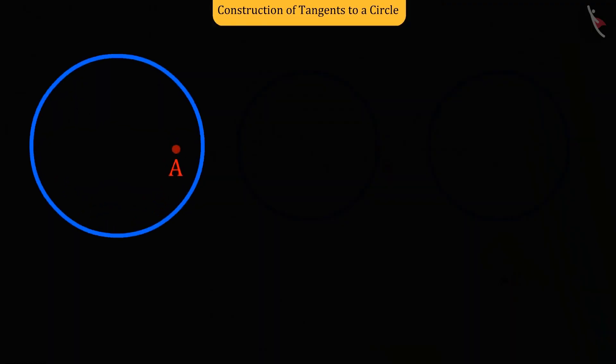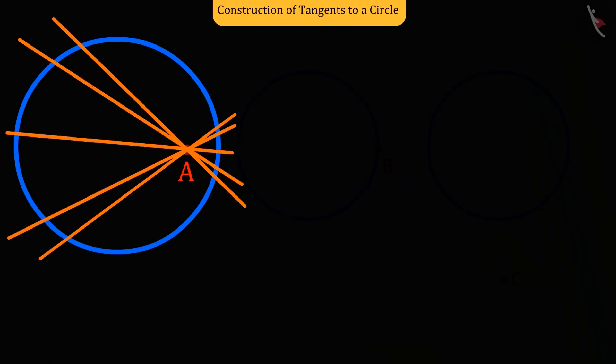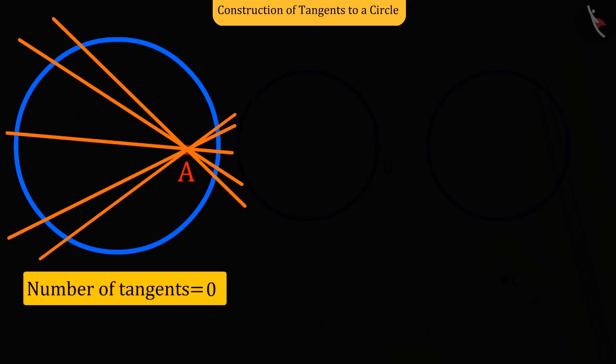Here in this case, the point is inside the circle. And as we have seen in the previous lesson, from a point inside the circle, the tangent line cannot be drawn on the circle. So the number of tangents here will be zero.